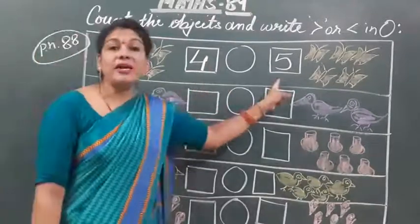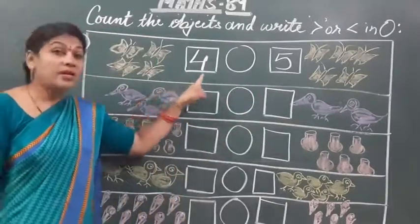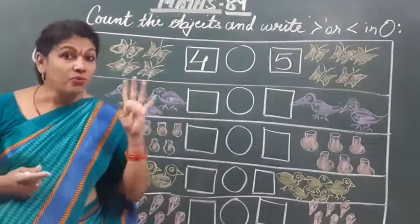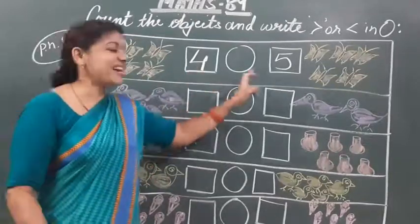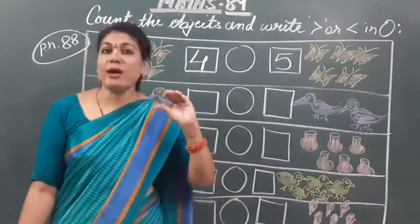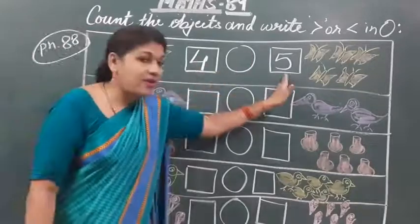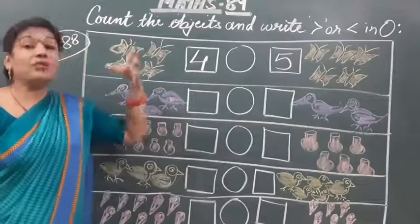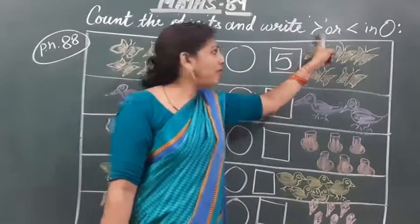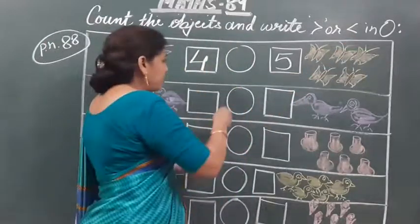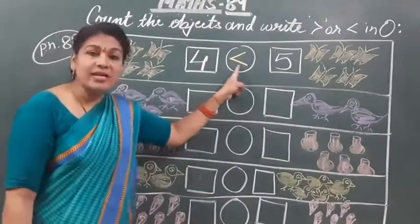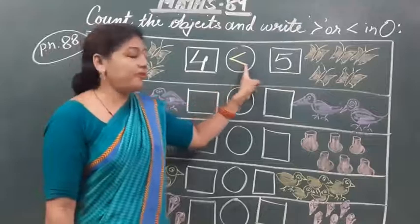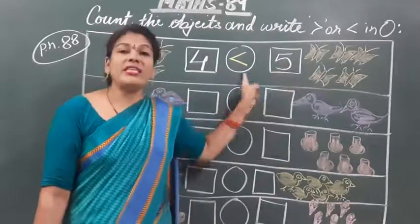Now the remaining work is to identify which one is greater and which one is less than. Four and five — which one is less? Chota kaun sa hai? Four. Then how to say? Four is less than five. Four, five se chota hai. So we will put the correct sign — we will use this less than sign, because four is less. The sharp pointed side goes toward four, and the open side goes toward five, because five is greater than four.